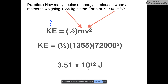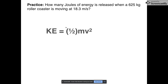Now let's do another example with something a lot smaller. A roller coaster car that is 625 kilograms is moving at about 18.3 meters per second. How much kinetic energy is there in this process? Kinetic energy is unknown. Mass is 625 kilograms, velocity is 18.3 meters per second. Plugging into the formula, it's not nearly as big a velocity, so the answer will be much smaller.